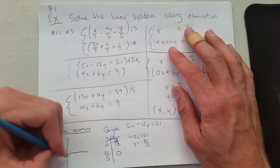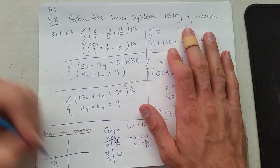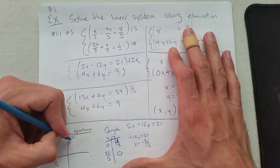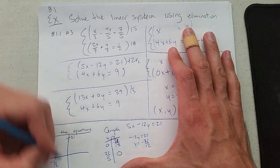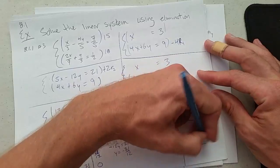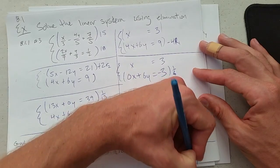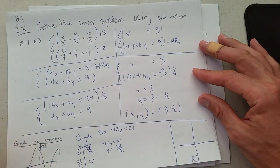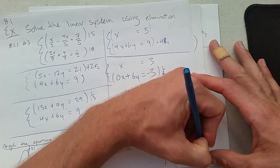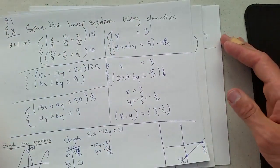I'll graph this first one: 0, negative 21/12—close to negative 2. And 21/5, 0. Oh, I'm graphing on the wrong axes. Forget that. Let me graph it here. x is 0, negative 21/12. And 21/5, 0. Two points—these are the xy-intercepts. I'll connect them with a line.